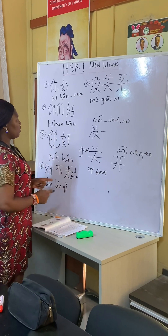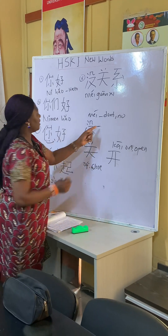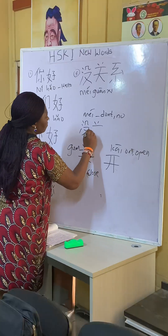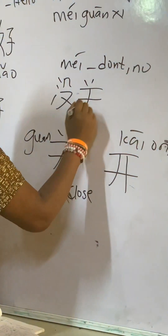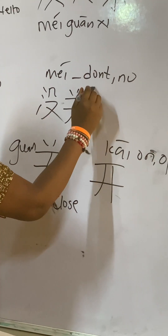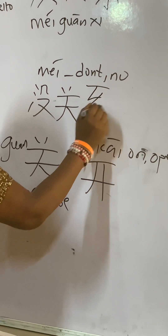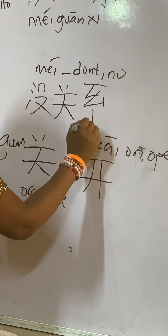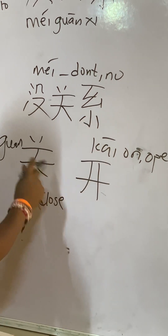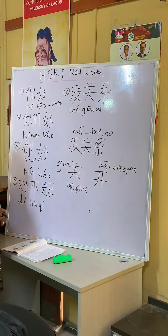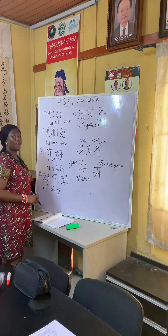So that is 关 (guān). Then 系 (xi). 关系 (guān xi) together means matter or relationship. So 没关系 (méi guān xi) means it doesn't matter.